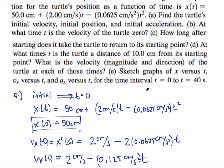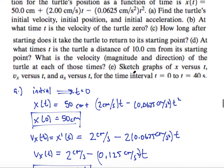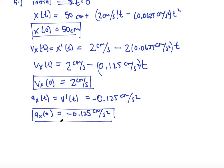Part b says at what time t is the velocity of the turtle zero. So thankfully I have this velocity function, and I can simply find out when that velocity is zero. So when is v x of t zero? I am going to substitute in zero for my v x of t. So I have 2 minus .125 times t. So solving for t in this case, the time for which my velocity is zero would be 2 divided by .125, which works to be, with a little calculator magic, 1.6 seconds.